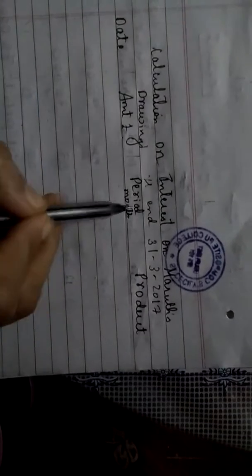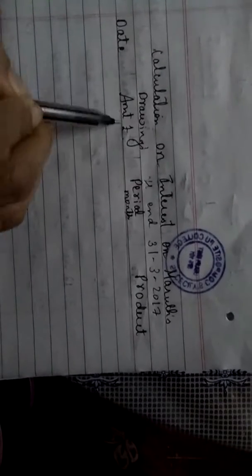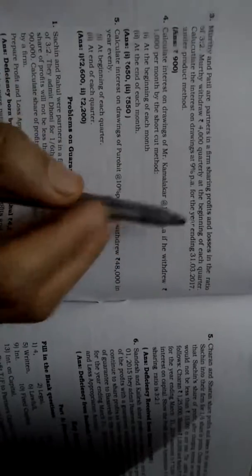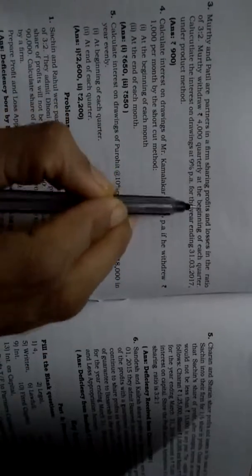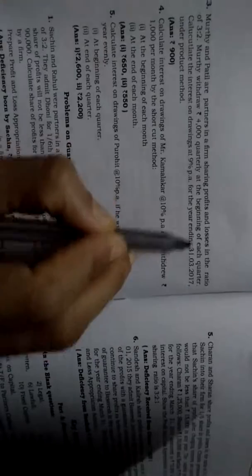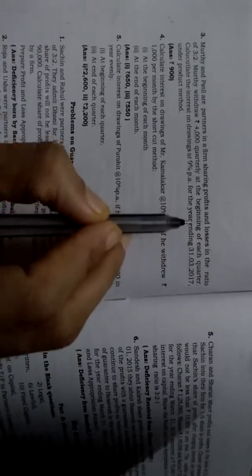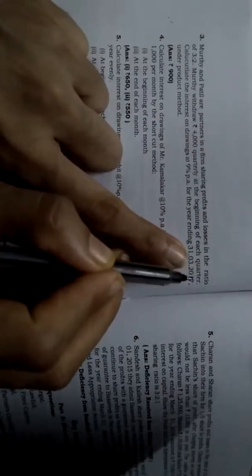Product method - the method is like this: date, amount rupees, period month, product. I'll repeat: date, amount rupees, period month, product. Now see, in this question students, date is not given like the previous problem, but at the beginning of each quarter. So beginning of each quarter - what is quarter? Quarter means four.